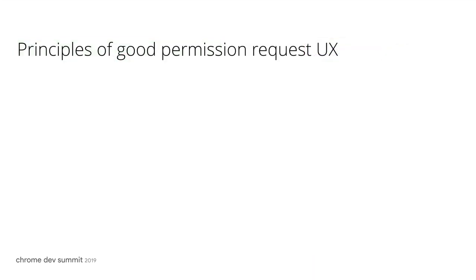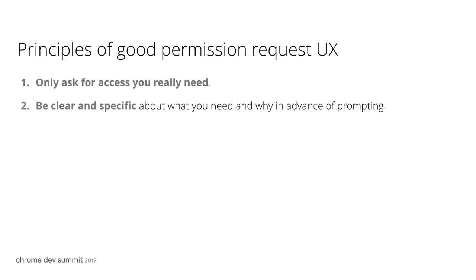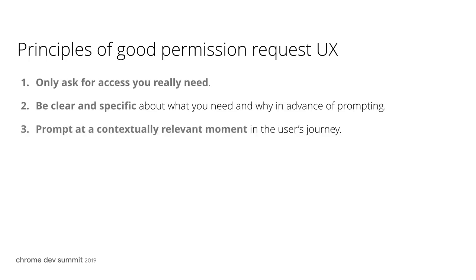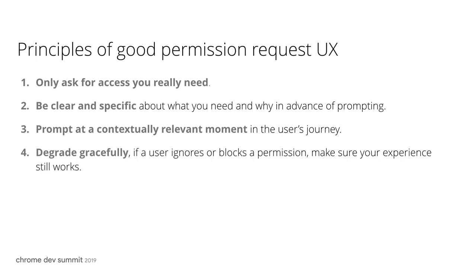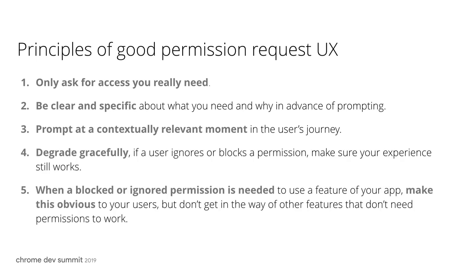To recap, these are the principles of good permission request UX. First, only ask for access you really need. Second, be clear and specific. Third, prompt at a contextually relevant moment. Fourth, degrade gracefully. And fifth, when a blocked or ignored permission is needed, make that obvious.